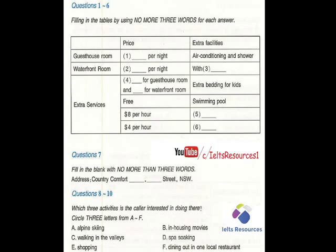Before listening to the rest of the conversation, you have some time to go through questions 7 to 10. Now listen to the last part of the conversation and answer questions 7 to 10. Great! Could you tell me the address? How do we get there? Yes, it's Country Comfort Albury, A-L-B-U-R-Y, at 648 Dean Street, New South Wales.